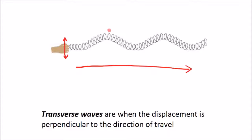Transverse waves have peaks, also known as crests, and they have troughs.